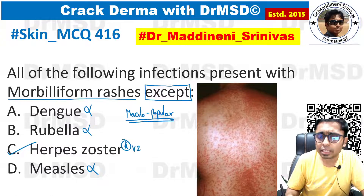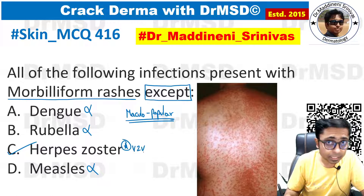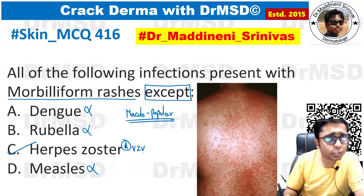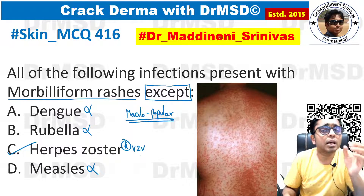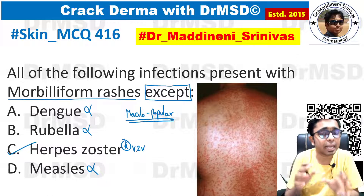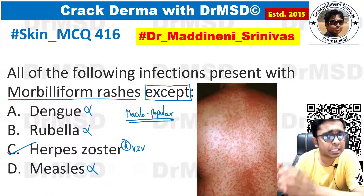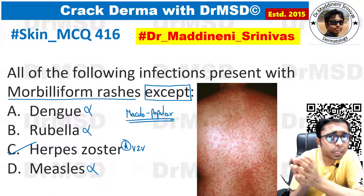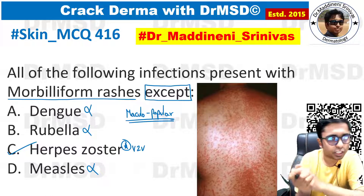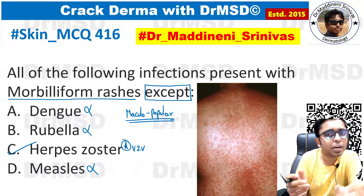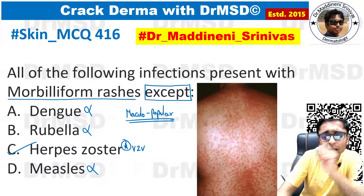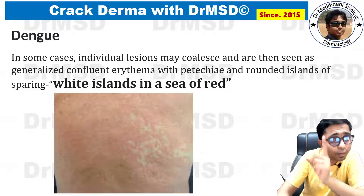In herpes zoster, the characteristic rash is going to be a painful rash which follows dermatomes. The rash consists of grouped vesicles present over a particular dermatome, not in a generalized fashion. This is the presentation of a herpes zoster rash.